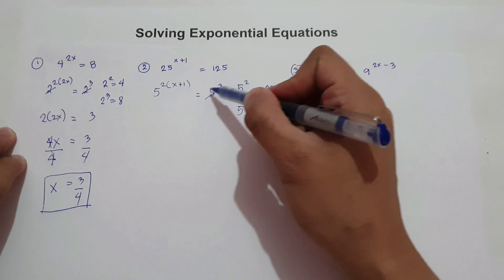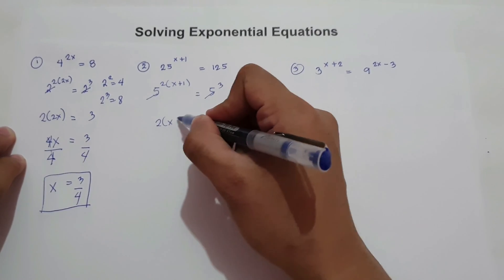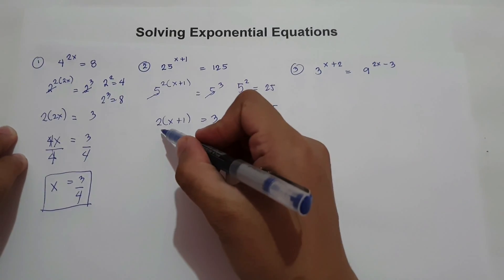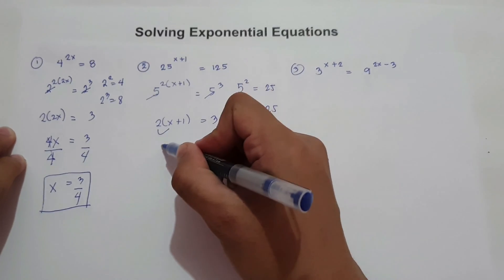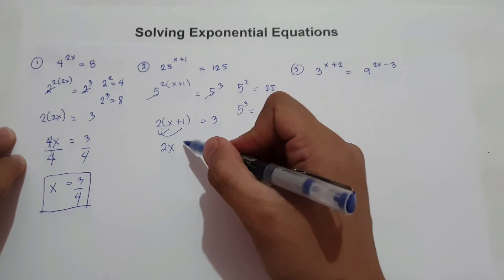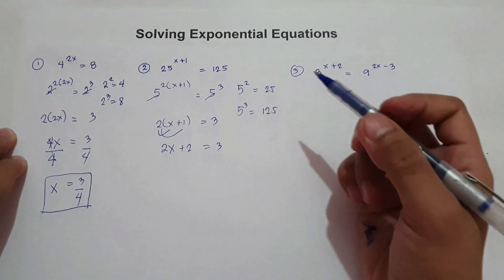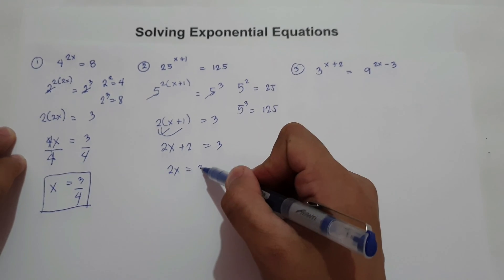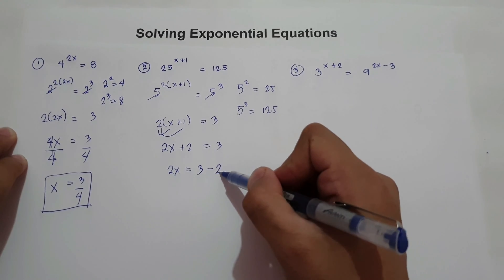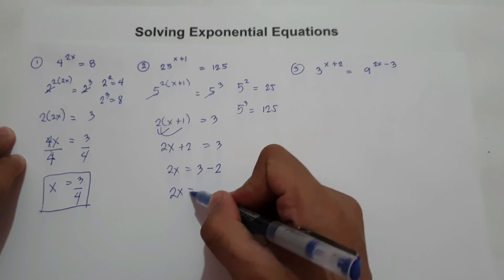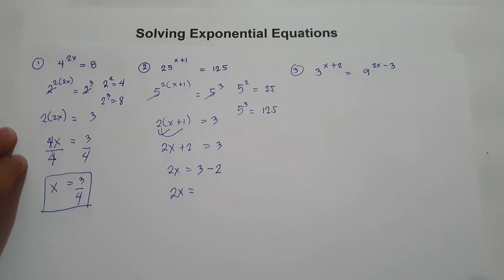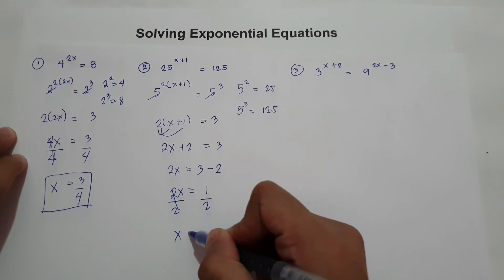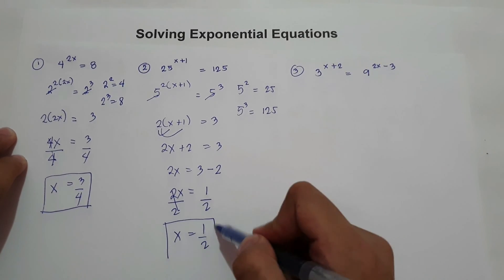Cancel the base, and we have 2 times x plus 1 equals 3. Multiply 2 by x plus 1: 2 times x is 2x, and 2 times 1 is 2, equals 3. Move 2 to the other side — from positive it became negative — so 2x equals 3 minus 2, that is 1. Divide both sides by 2. The value of x is 1 half.